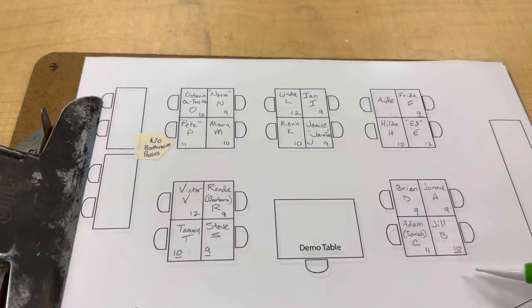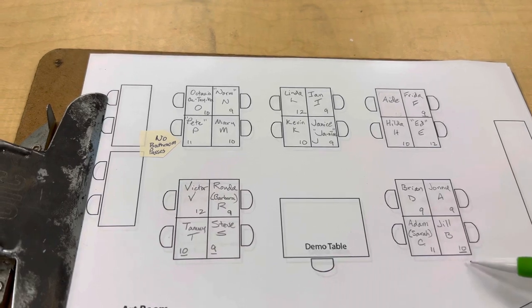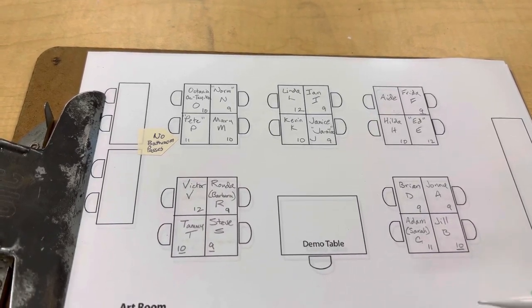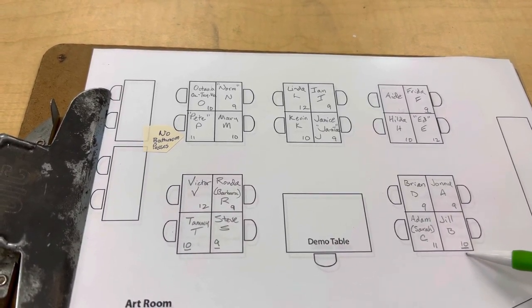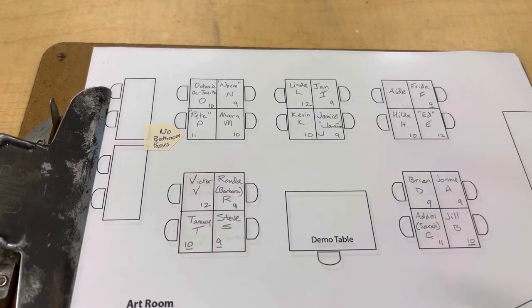So we've got ninth grade, ninth grade, eleventh grade, and tenth grade. I always put the grade next to the student's name so I know if I have a tenth grade assembly, these students will be gone and I don't have to worry about that for attendance.